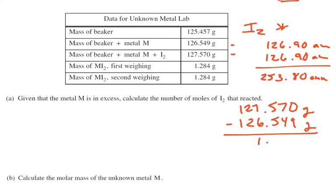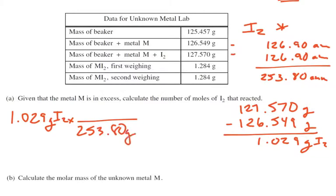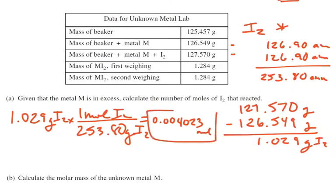This comes up to be 1.029 grams of iodine. Then just by stoichiometry, I'm going to say there's 253.80 grams of iodine in every mole of iodine. And then it gives me an answer: 0.004023 moles of iodine.